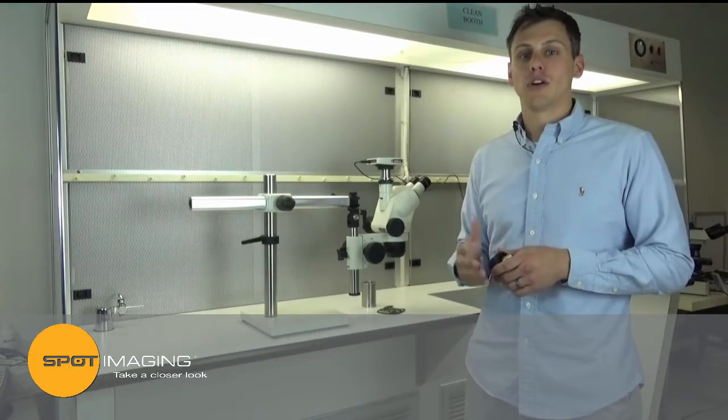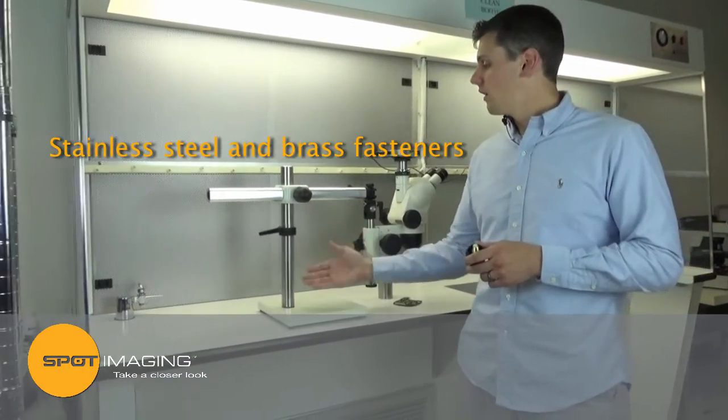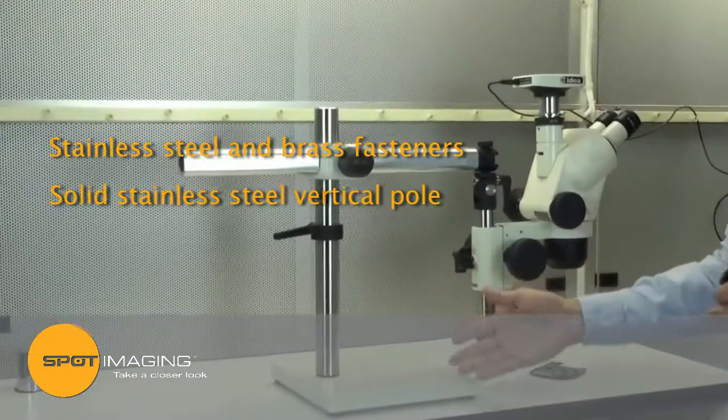We use strong corrosion resistant materials throughout our entire boomstand product line. Stainless steel and brass fasteners, a solid stainless steel vertical pole, and a heavy weighted base.